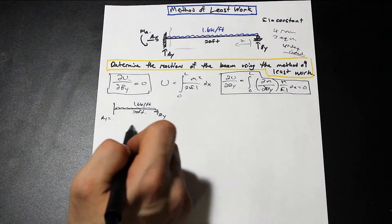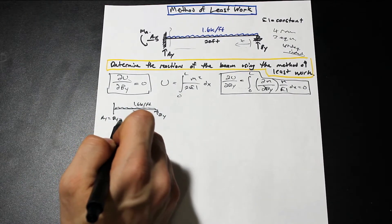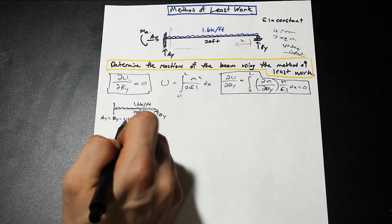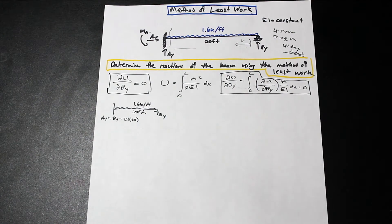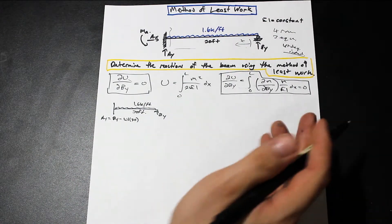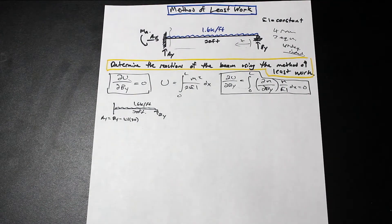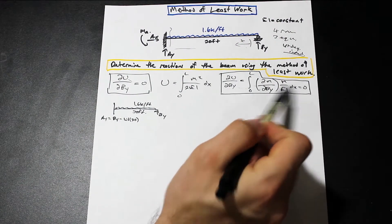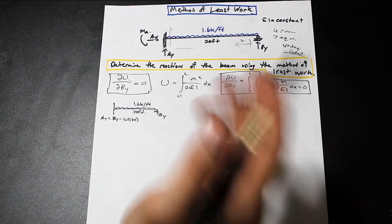And we'll do another question where that actually comes into play here. But you'd have BY minus 1.6 times 30, for example. So everything would be expressed in terms of BY. And since we have everything else in this equation, we can solve for BY and then we can solve for the reactions. And that's all made possible because we can say that the strain energy with respect to BY is equal to zero. So this whole thing is equal to zero.